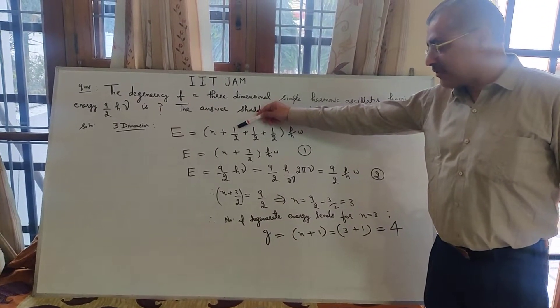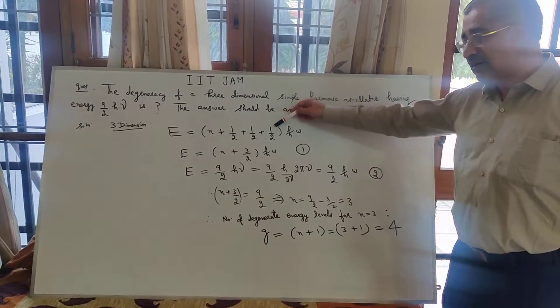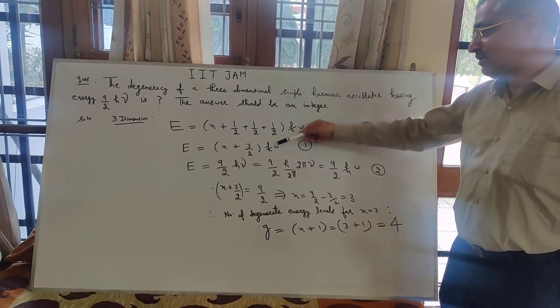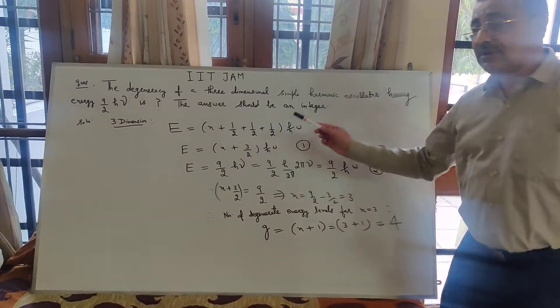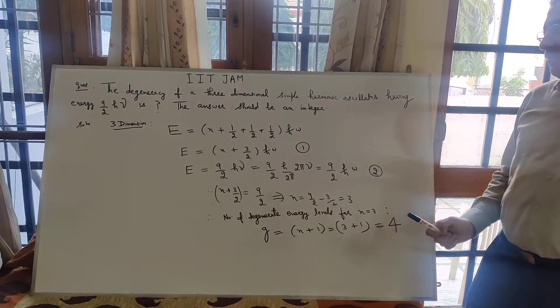Half corresponding to one dimension, half corresponding to another dimension, half corresponding to still another dimension. So, three-dimension simple harmonic oscillator has energy formula E equals n plus 3 by 2 into h cross omega.